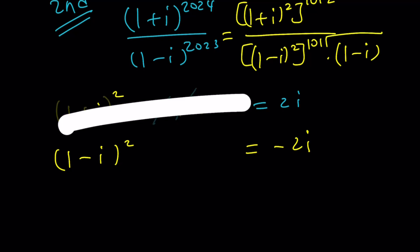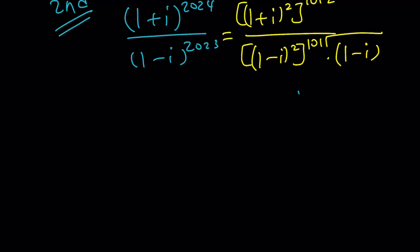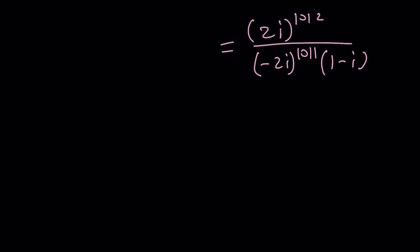Now, we can go ahead and write this as 2i. 2i to the power 1012. And then this one is going to be negative 2i to the power 1011. Multiply by 1 minus i. Now, we can go ahead and simplify each one of these. 2 to the power 1012 times i to the power 1012. And then 2 to the power 1011. But there's going to be a negative sign because 1011 is odd. And this is going to be i to the power 1011. And then at the end, multiply by 1 minus i. We'll take care of this last. Let's go ahead and simplify these first.